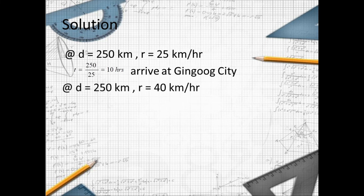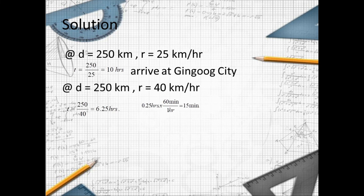Next, at distance equals 250 kilometers and rate equals 40 kilometers per hour, T equals 250 over 40, which equals 6.25 hours. Converting 0.25 hours to minutes: 0.25 times 60 equals 15 minutes. So the answer is 6 hours and 15 minutes to arrive at the destination.